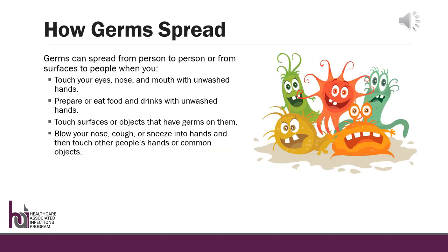Your hands are a vehicle for germs. Germs can spread from person to person or from surfaces to people when you touch your eyes, nose, and mouth with unwashed hands, prepare or eat food and drinks with unwashed hands, touch surfaces or objects that have germs on them, and when you blow your nose, cough, or sneeze into hands and then touch other people's hands or common objects. It is just as important for staff to wash their hands as it is children. An effort from everyone inside a child care facility reduces the number of germs on toys, food, surfaces, and hands.